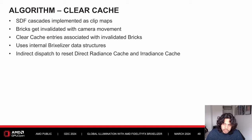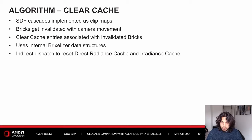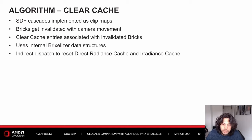One last detail: how the radiance and irradiance caches are cleared. The cascades in Brixelizer are implemented as clip maps, and bricks get invalidated as the camera moves. To compensate, we clear the cache entries associated with invalidated bricks using buffers internal to Brixelizer. At the beginning of each Brixelizer GI update, we use an indirect dispatch to clear the relevant radiance and irradiance cache entries. That concludes our look into the algorithm.